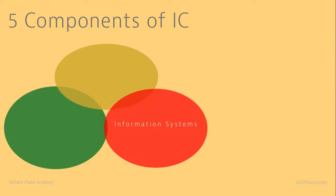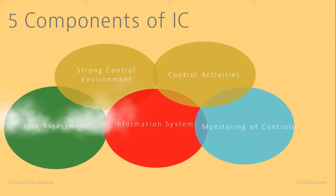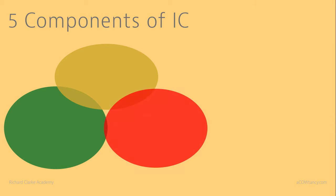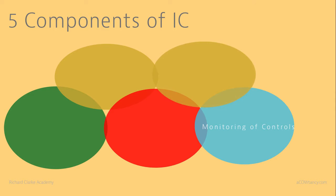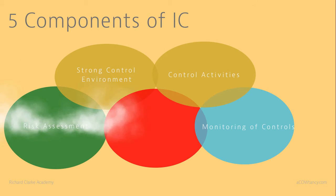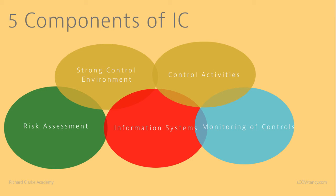Remember, control activities are the actual individual internal controls we look at in more detail. In further tests with two, three, and then four components missing, the answers are: strong control environment, control activities, risk assessment, and information systems. The goal is to make sure you remember all five components — and now you do.